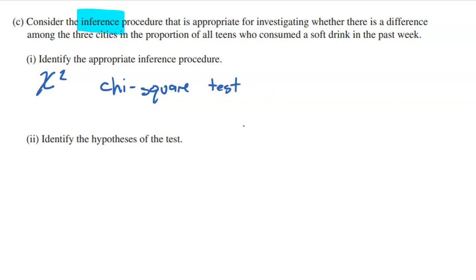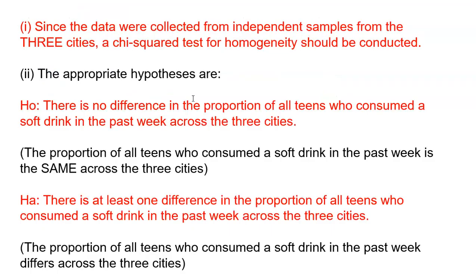There are three different types of chi-squared tests. This is a chi-squared test for homogeneity. I recognize that because we have three independent samples — a classic sign of a homogeneity test — and the question is not asking whether one variable is independent of another, which would be a test for independence. We're clearly comparing three different samples, not examining if two variables are independent of each other. So the signs point to a chi-squared test for homogeneity. Since the data was collected from independent samples from the three cities, a chi-squared test for homogeneity should be conducted.